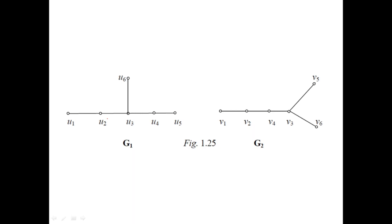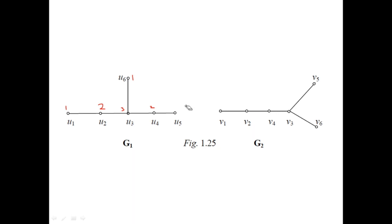For that you can write the degrees: u1 has degree 1, u2 has degree 2, u3 has degree 3, u6 has degree 1, u4 has degree 2. For G2, the degrees are: 1, 2, 1, 2, 3, 1, 1.